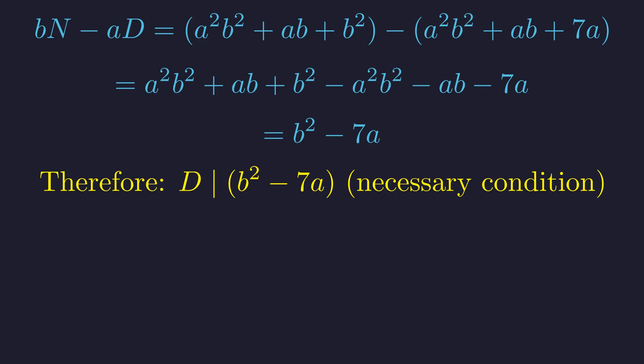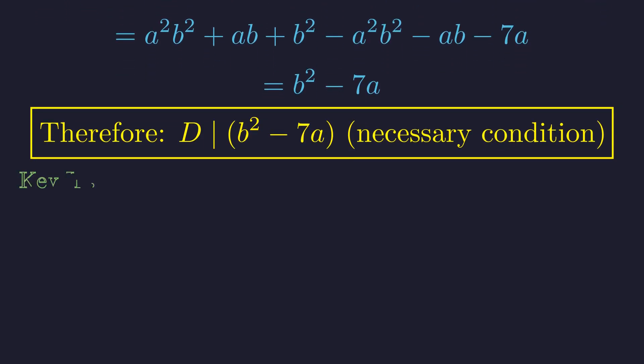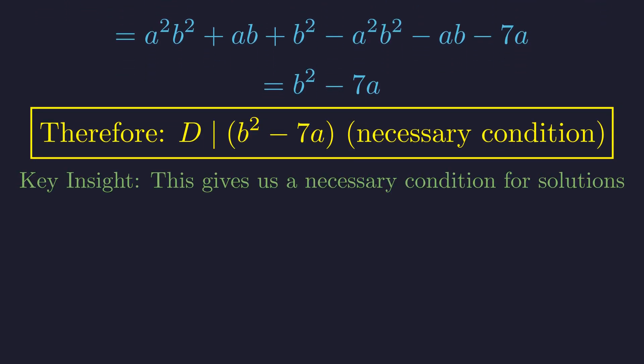This is a crucial logical step. The new condition is necessary but not guaranteed to be sufficient. Any solution pair must satisfy this simpler divisibility, so we can use it to find all candidate solutions. Each candidate must then be tested against the original condition. This simplification is the core of the solution — we have replaced a complex polynomial divisibility with a much simpler one, which we can now analyze through case analysis.